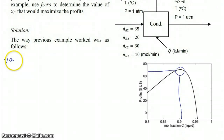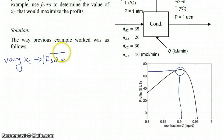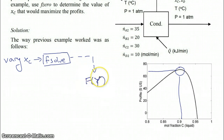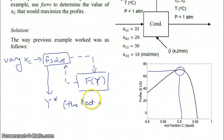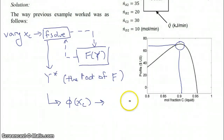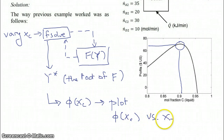The way the previous example worked: we started by varying xc, and every time we had a value of xc we sent it to fsolve. fsolve called a function f(y) that we wrote, which returned its value back to fsolve. fsolve varied the values of y to find where f was zero, and what fsolve returned was y-star — the root of f. Once we found the root, we could calculate the profit for that xc value and plot phi as a function of xc, revealing a maximum.